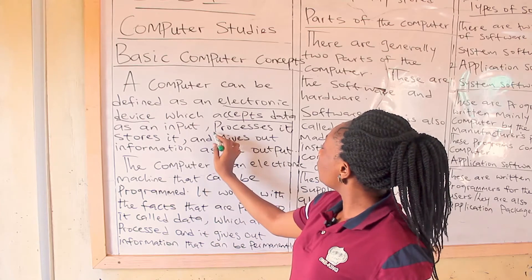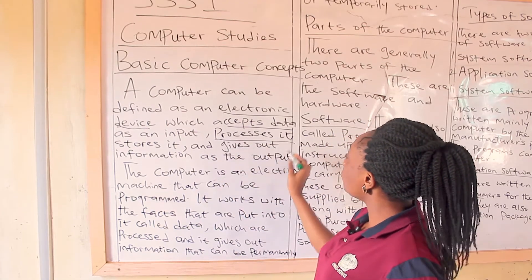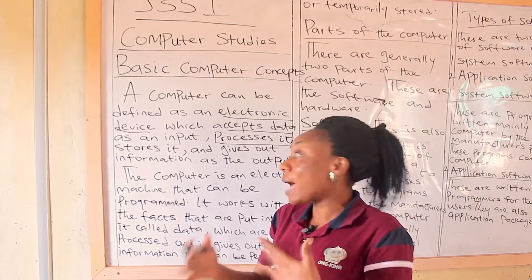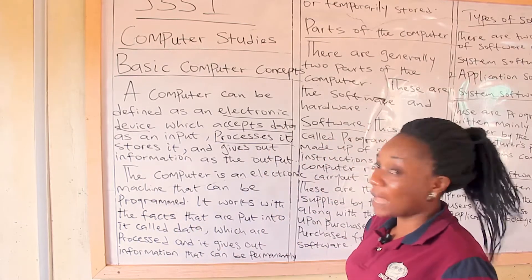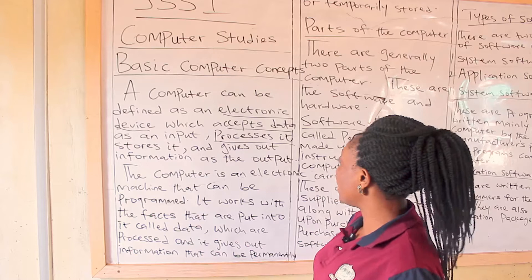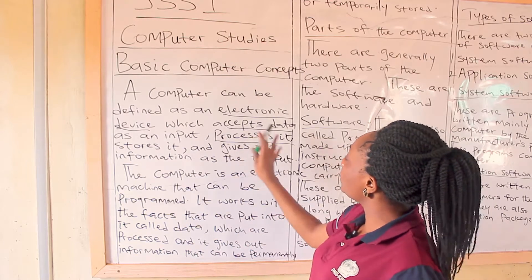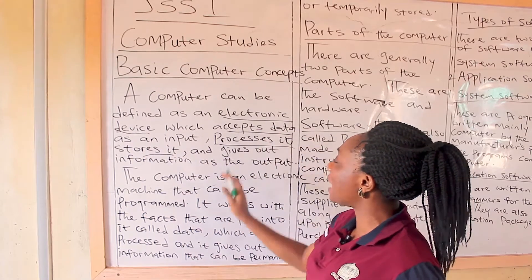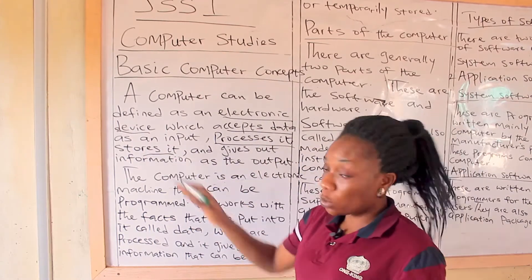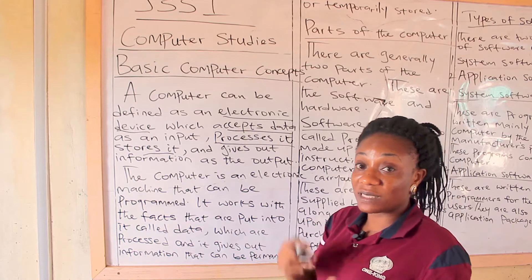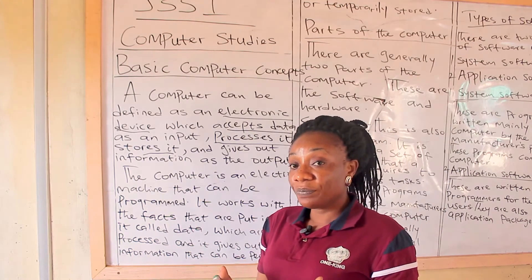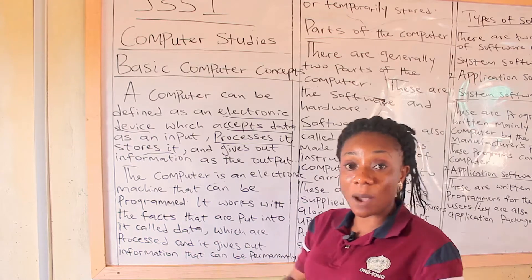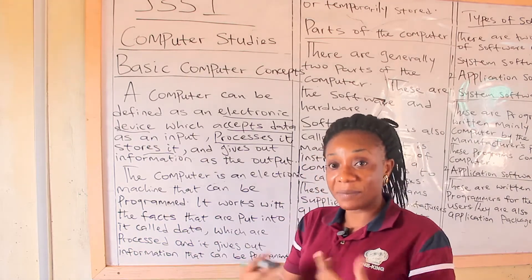Now let's look at the second thing it does — it processes the data. What is the meaning of process? It means to work on it, to perform some action on the data being received by the computer. Then after the computer has processed it, it will store it — as a means of saving it so that it will not disappear or get lost in case of power failure or damage.